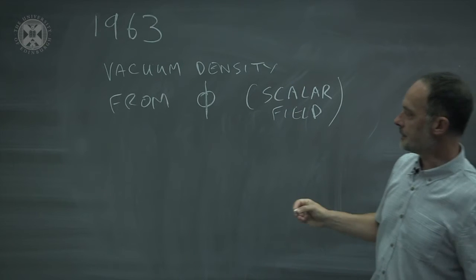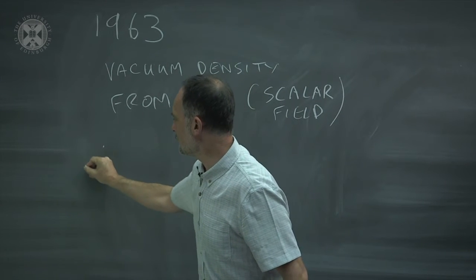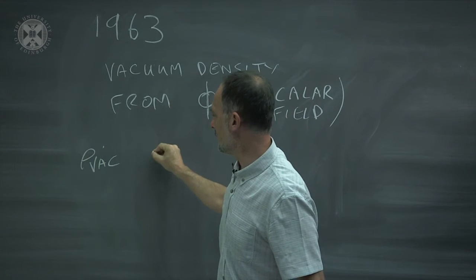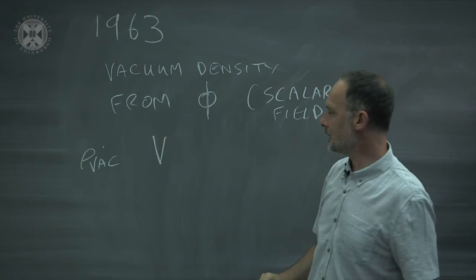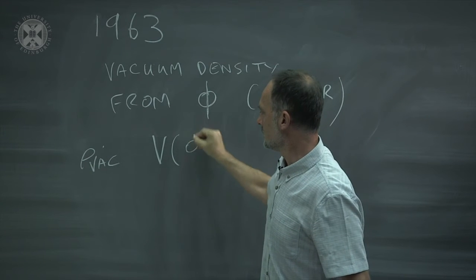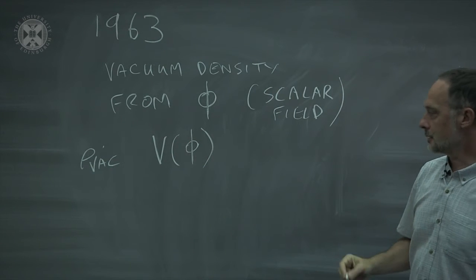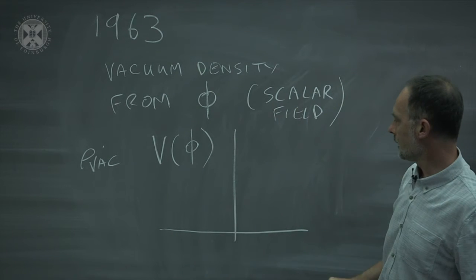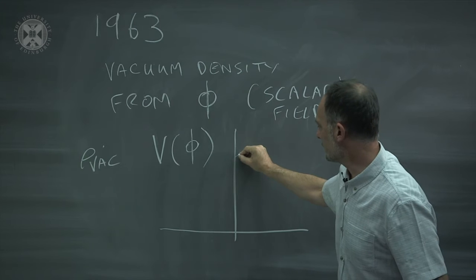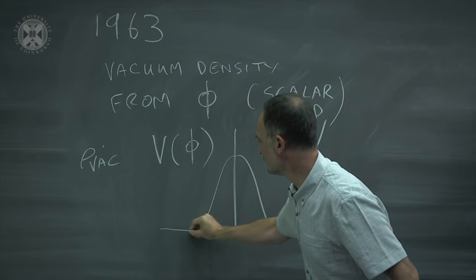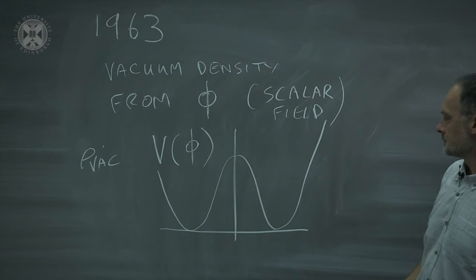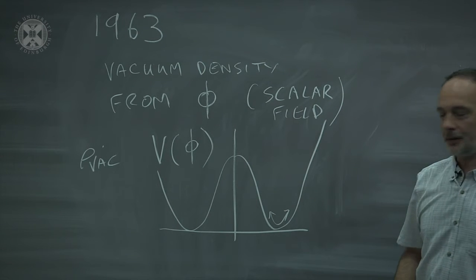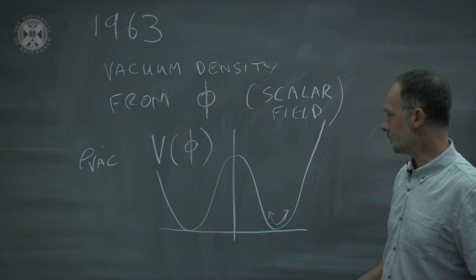But what Peter added was that there was an energy density, which is normally written as V for potential, which was a function of the field, and as we've seen, that looked something like this. And what we think of as the Higgs boson are field oscillations down at the bottom of that potential.